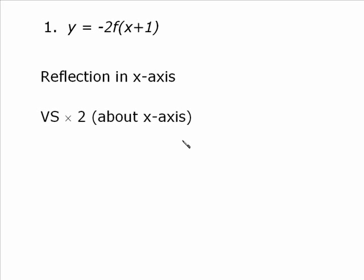We also had a vertical stretch by a factor of 2 about the x-axis. That would be the 2 in front. And then we had a horizontal translation of 1 unit to the left. So in that order, reflections, stretches, translations, I will find where this point 1 comma 1 ends up.